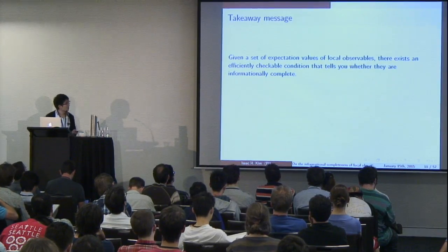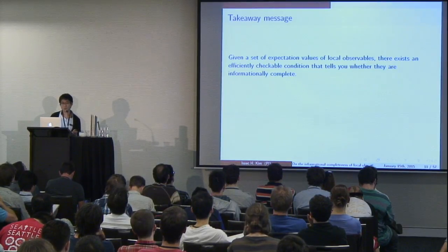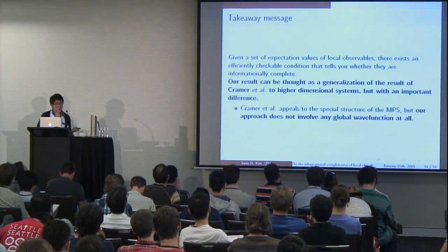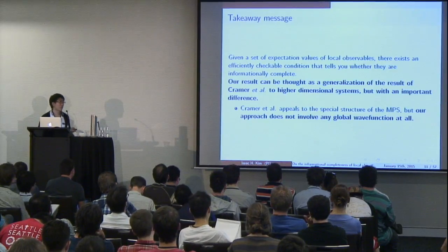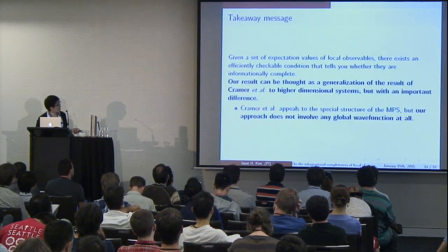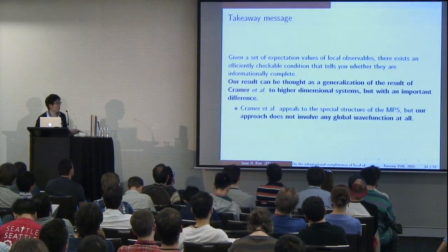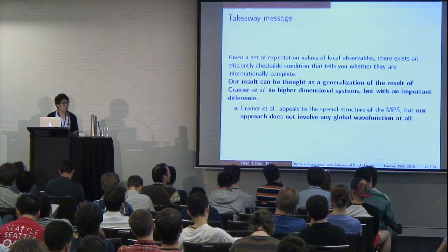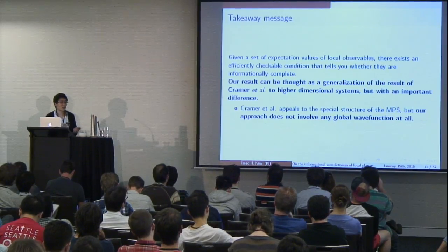So epsilon is something that this algorithm outputs. If it's small, you can convince yourself that in this setting, local observables can be informationally complete. The takeaway is: given the expectation values of local observables, there exists an efficiently checkable condition which tells you whether they are informationally complete. Our result can be thought of as a generalization of Kramer et al. to higher-dimensional systems, but with an important difference: their work appeals to the special structure of matrix product states, but our approach does not involve any global wave function at all.